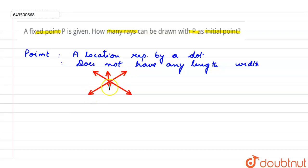Now, let's see what a ray means. A ray is a part of a line. It has one end point and extends infinitely in any direction.